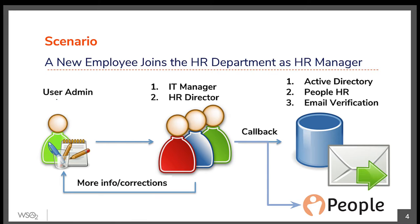Since PeopleHR contains sensitive information about employee's past performance, etc., it is required to get the explicit approval from the HR director before giving administrative access to PeopleHR. For this, a sub-workflow is kicked off. At the end of it all, the account is created. Imagine if this process is done manually for each such request — it is inefficient for the IT department and kills the productivity of the said employee. This is one of the identity and access management problems digital enterprises face today, and it is exactly what WSO2 Identity Server's workflow management is set out to solve.